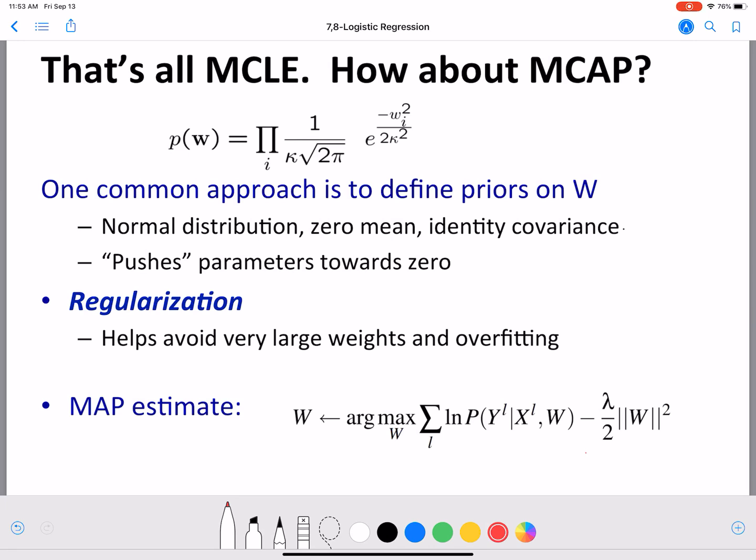MCLE is a conditional equivalent of MLE and MCAP is a conditional equivalent of MAP. We know that in MAP we introduce a prior. We saw that in point estimation. Here similarly we are going to introduce a prior. Prior is introduced on the parameters and the parameters of the logistic regression function are the weights. So we introduce a prior on the weights.